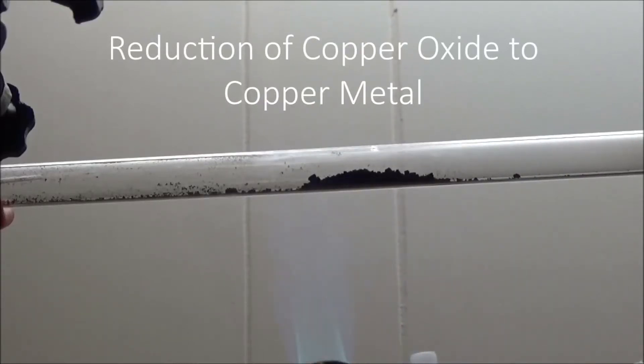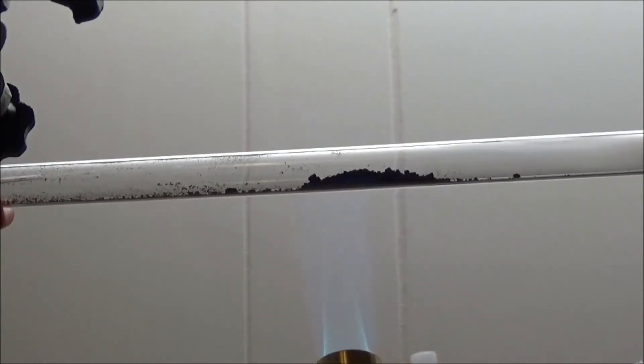Hello everyone, and welcome back to the lab. In this video, I'll be reducing copper oxide to copper metal using hydrogen gas. This method works on a variety of metal oxides, and I'll show a more interesting example in a future video.